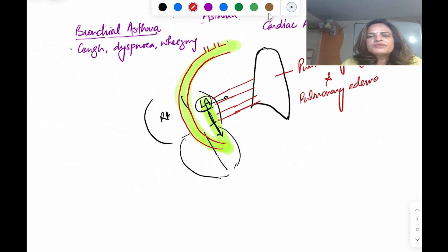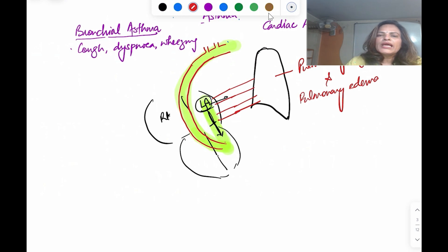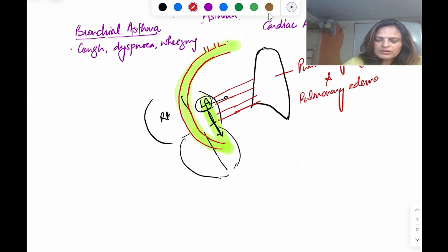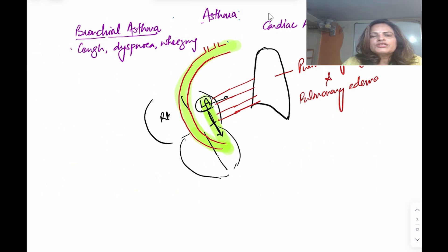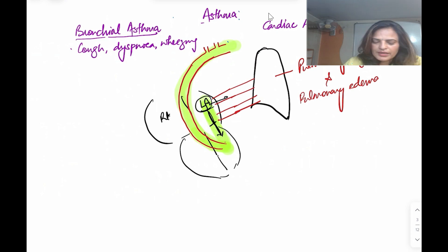Because of this pulmonary congestion and edema, the patient will present with cough and wheezing. This condition is called cardiac asthma.